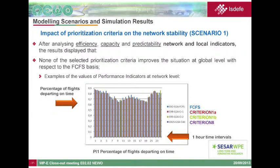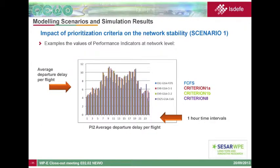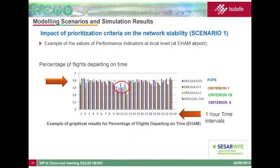Some examples of the results: the diagram shows percentage of flights departing on time on the y-axis and one-hour time intervals on the x-axis. In blue is first-come, first-served; in green and red, criterion 1 and its opposite; in purple, criterion 8. For each time interval, even if differences are not large, the values are better for first-come, first-served. A second diagram shows average departure delay per flight, again with first-come, first-served performing best. This pattern holds even at the local level — for example, Amsterdam airport also shows the best results for first-come, first-served.